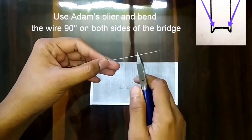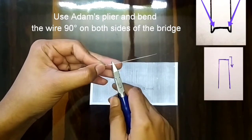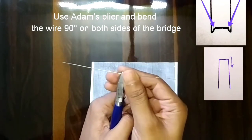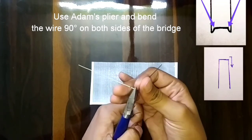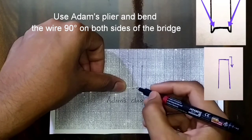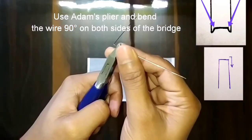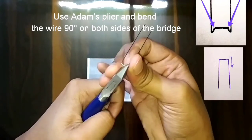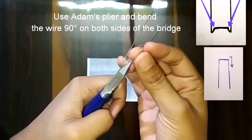With the help of the Adams clasp plier, I will give 90 degree bend to the wire in the downward direction as shown in the figure. Give the bend on both sides of the bridge. Try to give sharp bends.